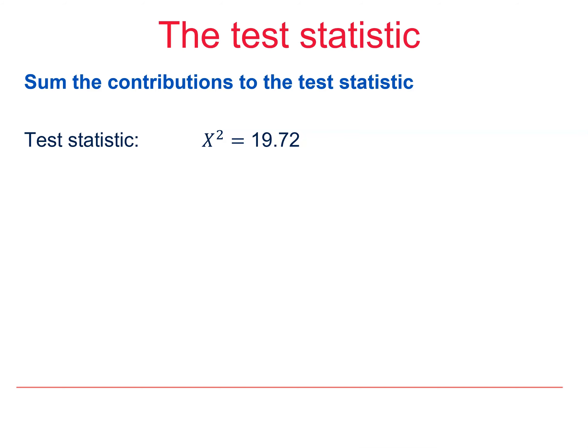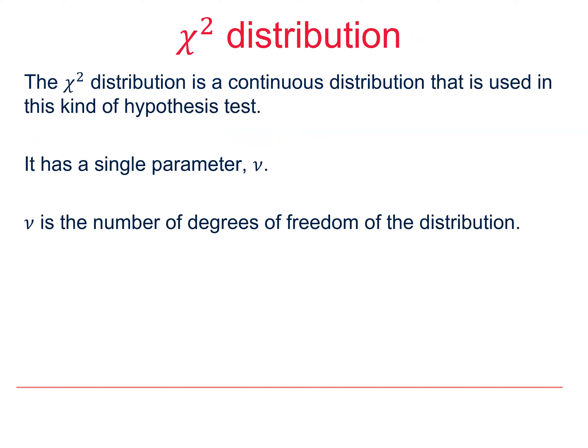So, now we have our test statistic, how do we have a sense of whether this is an unexpectedly large value or not? To do this, we're going to use a new distribution to you, the chi-squared distribution.